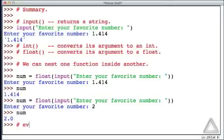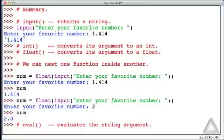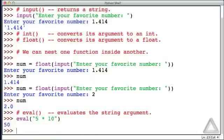We also discussed the eval function, and this evaluates the string argument that it's provided with. For example, if it is given the string argument 5 times 10, it simply evaluates that expression and returns the result, so we get the integer 50.